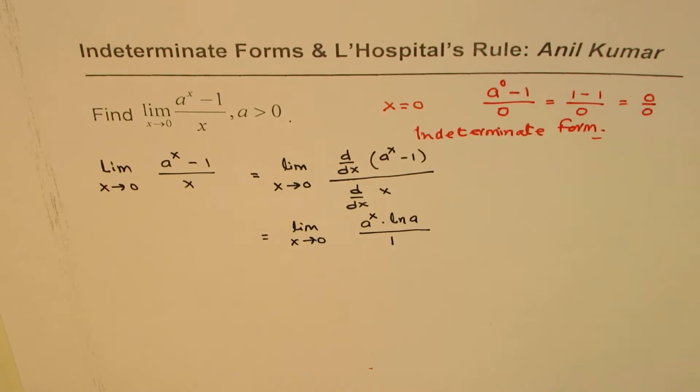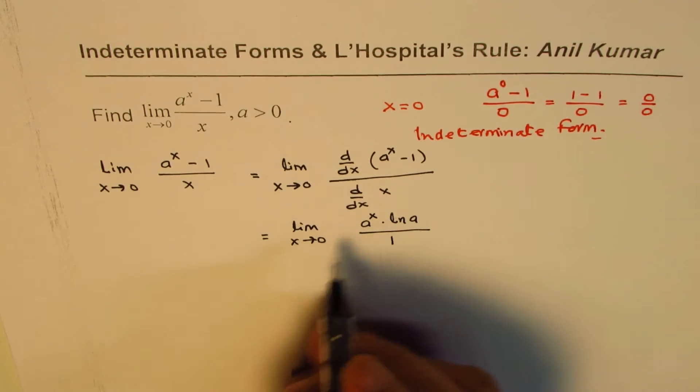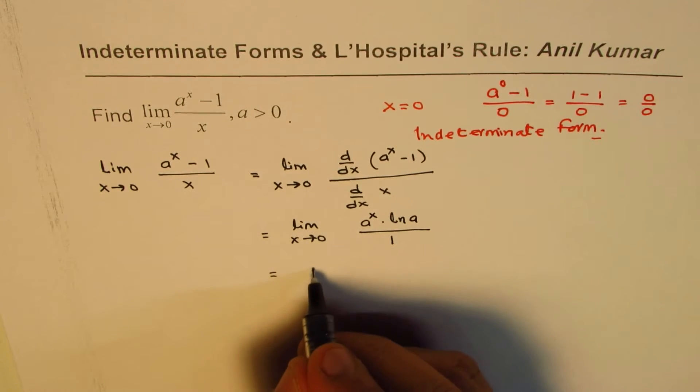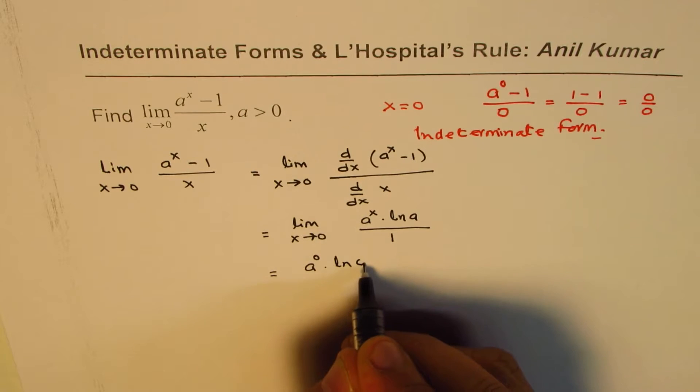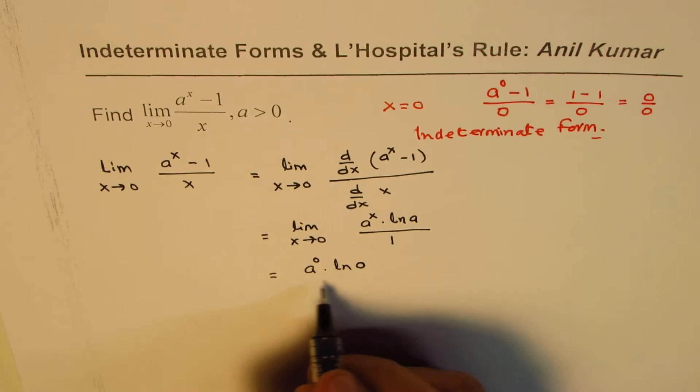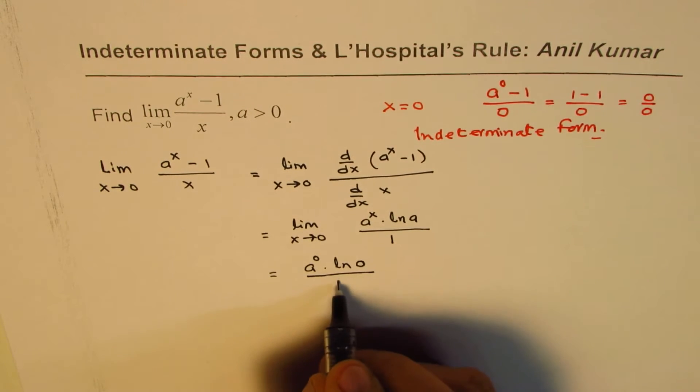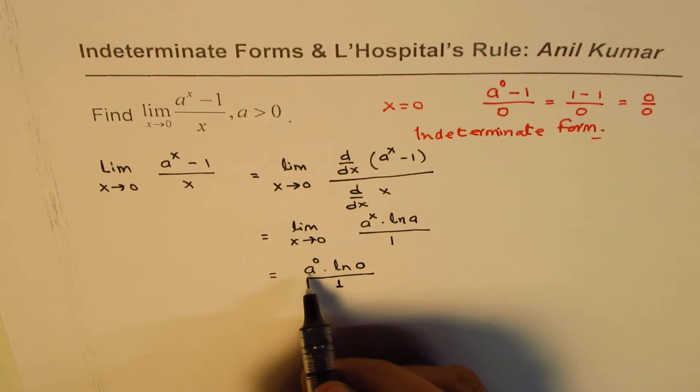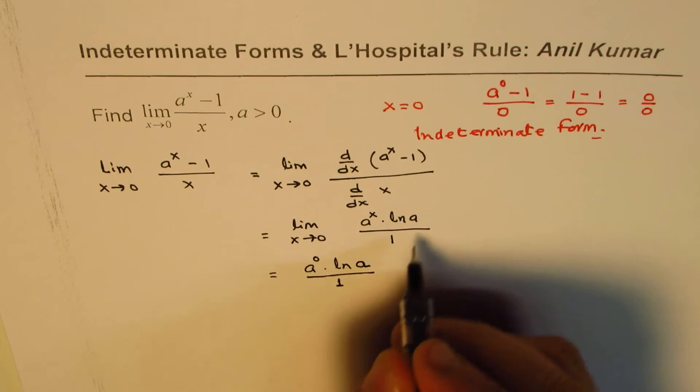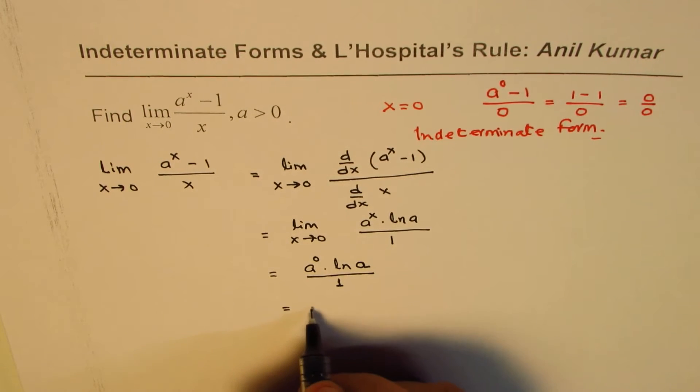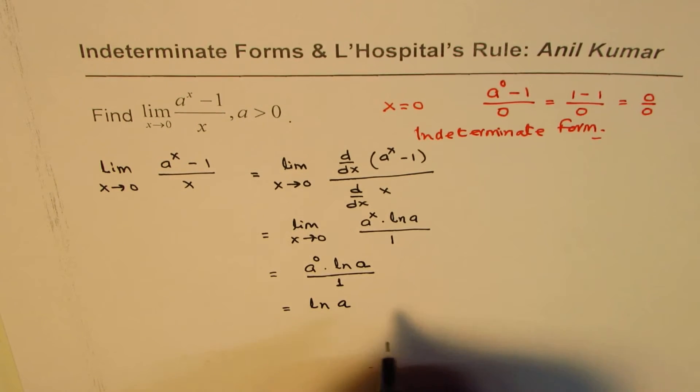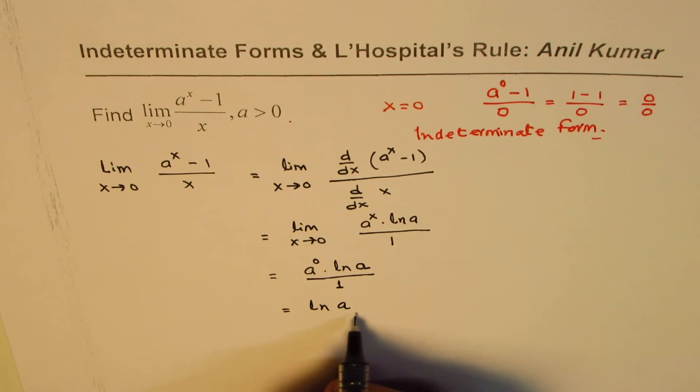Now you can substitute x equals 0, so we get a to the power of 0 times ln a over 1. Anything to the power of 0 is 1, so what we get here is ln a.